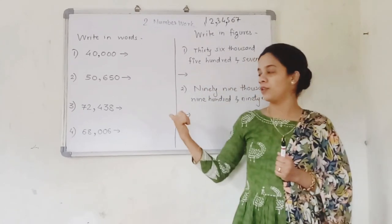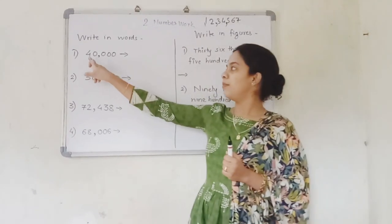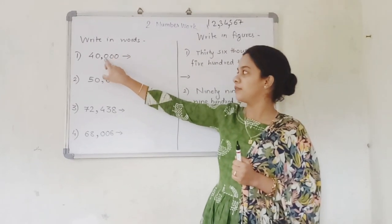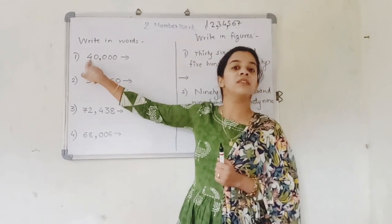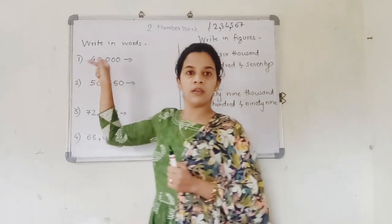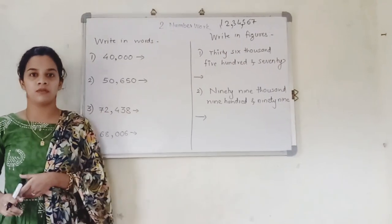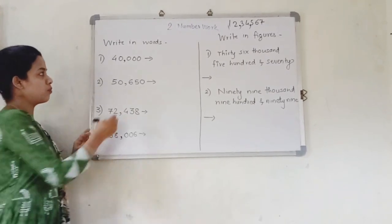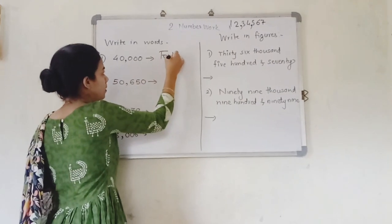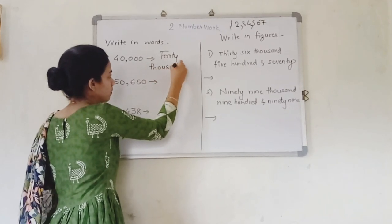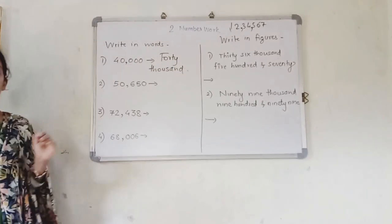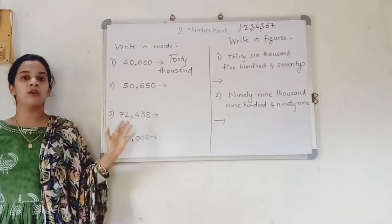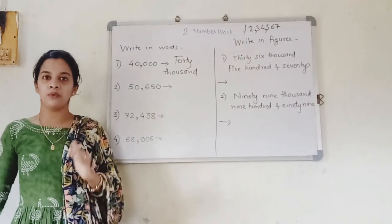Just pay attention to the board now. Can you tell me which number this is? If you observe: this is the units place, this is tens, this is hundreds, this is thousands, and this is ten-thousands. So the number given on the board is 40,000 — there is nothing in the hundreds, tens, or units places. So I am just going to write it as forty thousand. Because of the comma, things are much easier to understand.